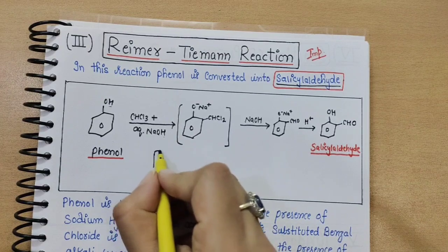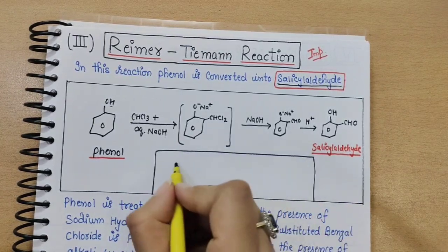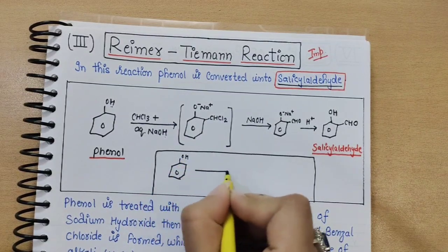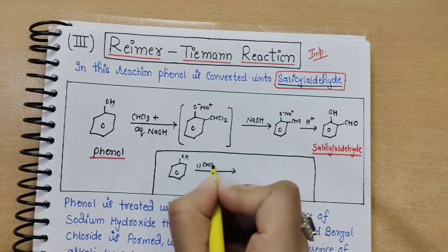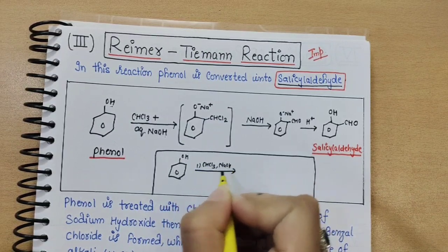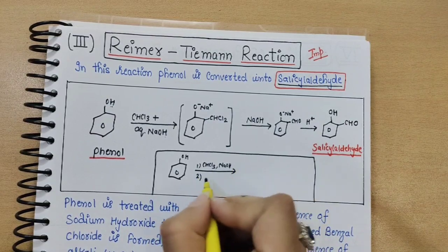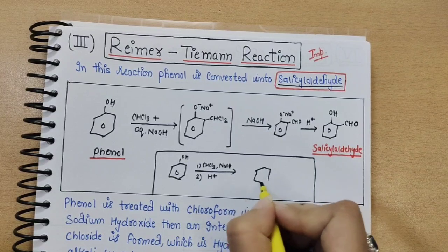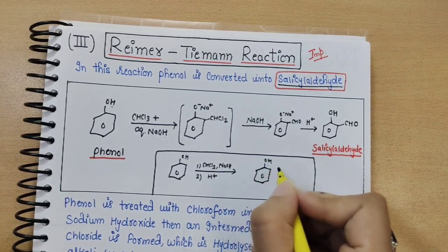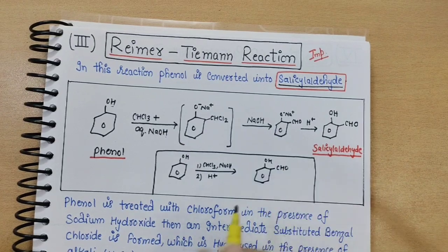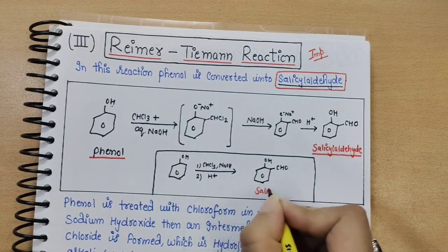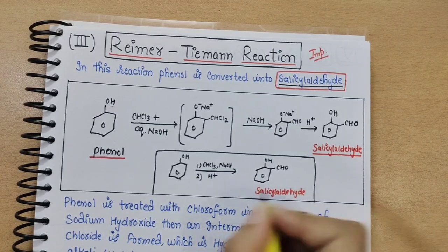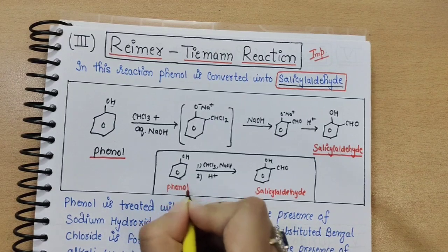In the short form: phenol reacts with CHCl3 and NaOH. In the next step, acidification is applied. You don't need to write NaOH again. The direct result is the product with a CHO group at the ortho position — that is salicylaldehyde. This is the short form of the Reimer-Tiemann reaction.